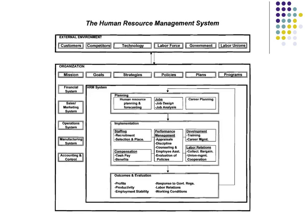This first slide is the human resource management system. In the HR management system, you can see the HR function going from planning to implementation to outcomes as we discussed in class. We're looking at the HR planning side of things and how important it is to do a good job — to forecast and to plan — based on what we know about the company's policies, programs, and strategies.